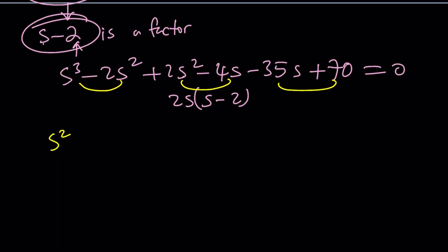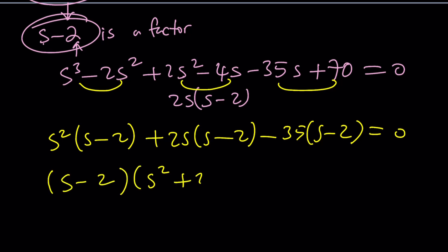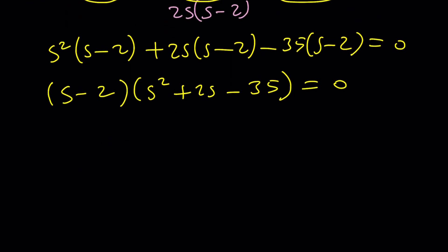So s squared times s minus 2, 2s times s minus 2, minus 35 times s minus 2. Beautiful. And from here, we get s squared plus 2s minus 35 equals 0. Awesome. And guess what? This quadratic can also be factored. What else can you ask for? It's going to be two numbers whose sum is 2 and whose product is negative 35. I think those are 7 and negative 5. This means s plus 7 and s minus 5 as factors. Awesome. Such a beautiful equation with all integer solutions. And obviously, these are all factors of 70.